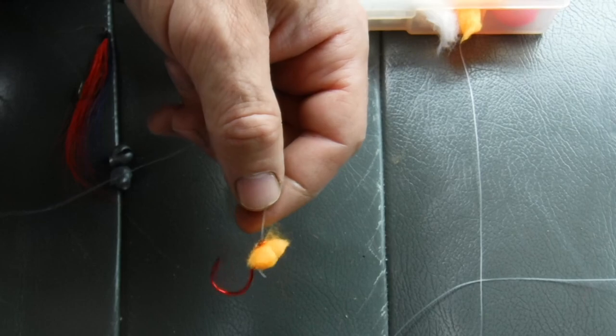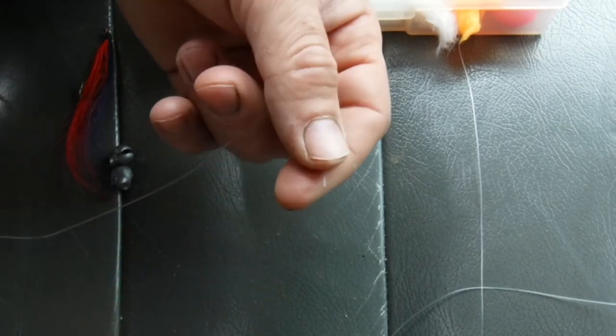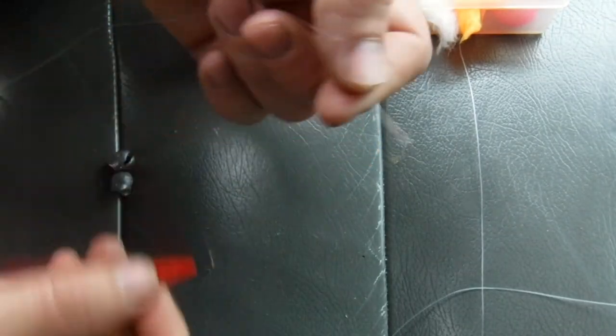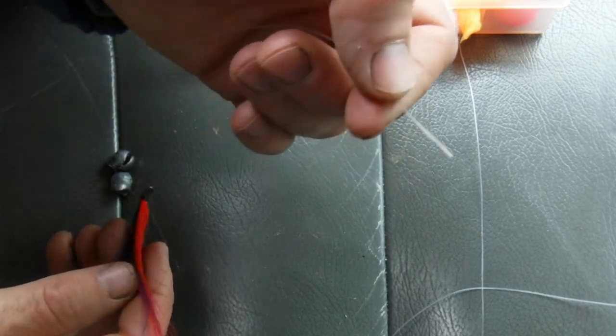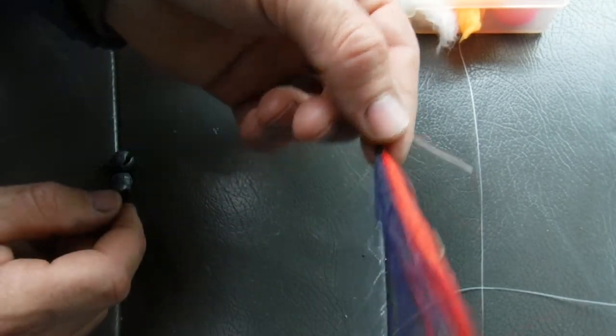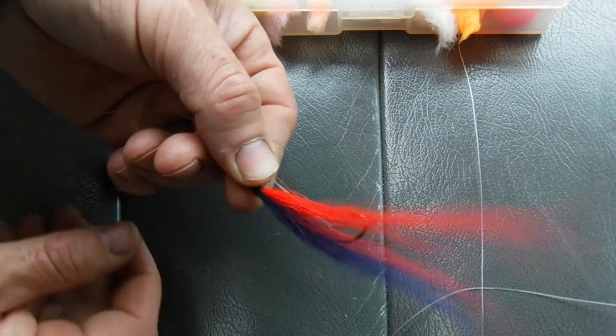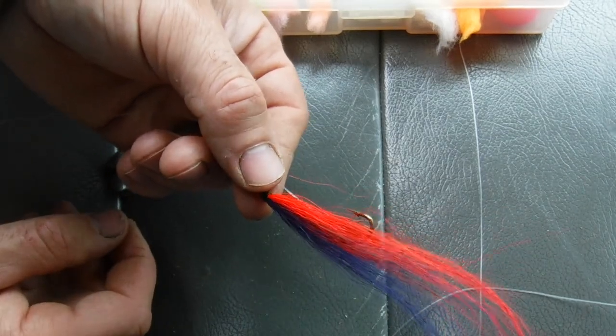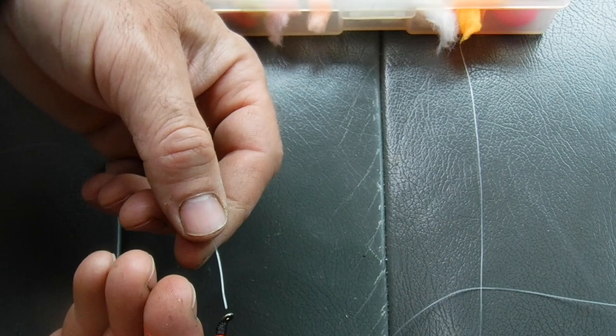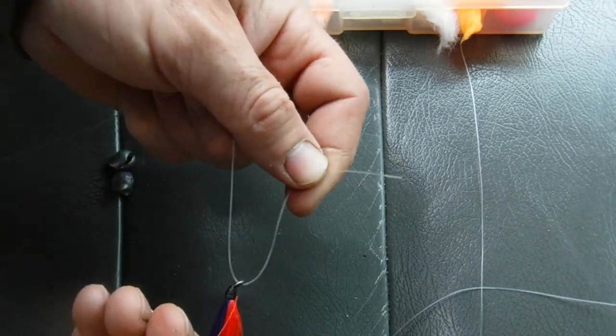The other technique that we have is you can simply, and this is the easier technique which I suggest beginners to use, is just go to the store. Just buy these red flies, you know, two or three for a buck. And you just come out here, loop that through.